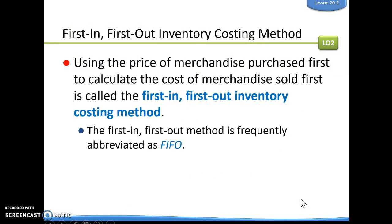So first of all, we're going to talk about FIFO — first in, first out. This is when we are using the price of merchandise purchased first to calculate the cost of merchandise sold first. So the first stuff that we bought is going to be the first stuff that we sold.